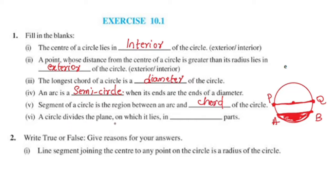A circle divides the plane on which it lies into three parts. We will divide a circle into three parts. The inside part is the interior, the outside part is the exterior, and the circle itself. Let's divide the parts into three parts.